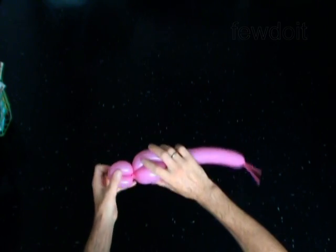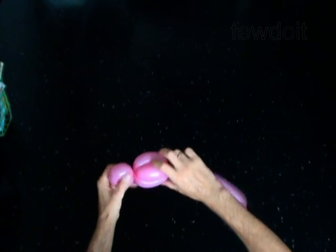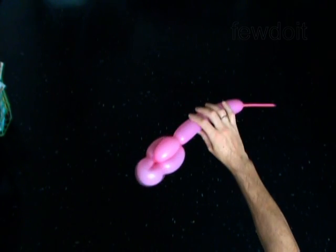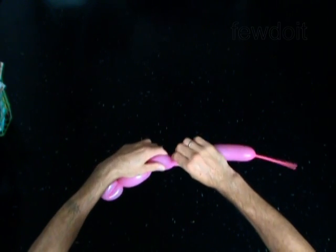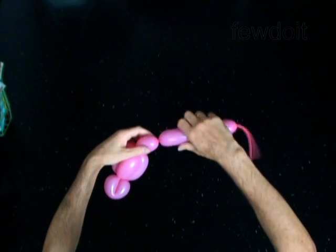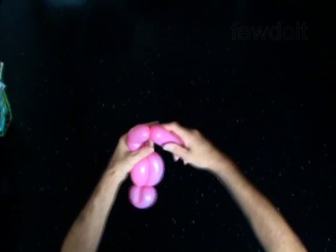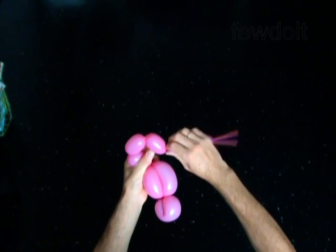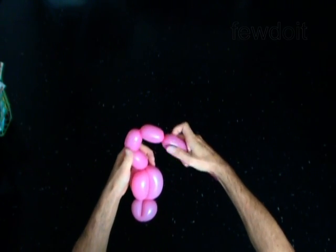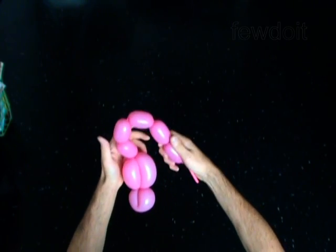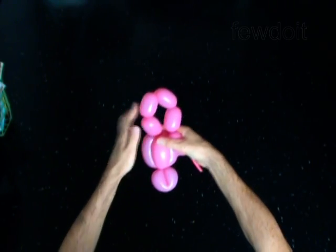The next 4 bubbles you twist to make the legs. Twist the fifth 2-inch bubble. Twist the sixth 2-inch bubble. Twist the seventh 2-inch bubble. Twist the eighth 2-inch bubble. Lock both ends of the chain of the last 4 bubbles in one lock twist.